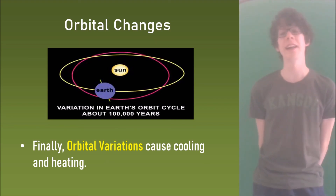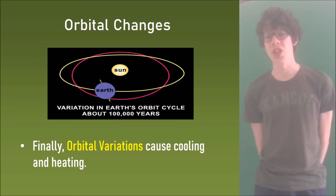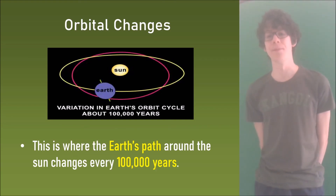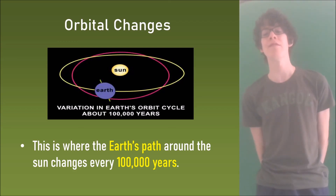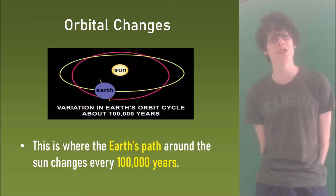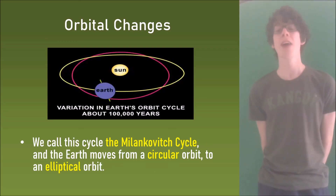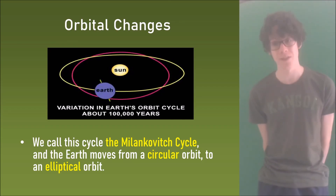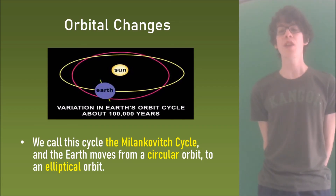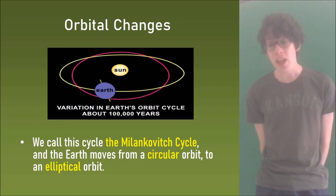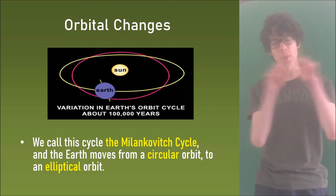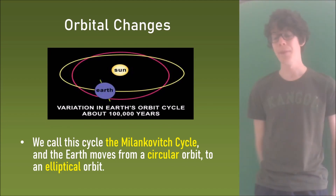Finally, orbital variations cause cooling and heating. This is where the earth's path around the sun changes every hundred thousand years, and we call this cycle the Milankovitch cycle. The earth moves from a circular orbit to an elliptical orbit — an ellipse is similar to an oval, as you can see here.